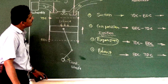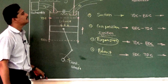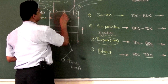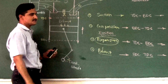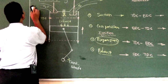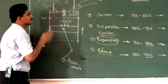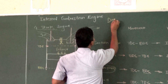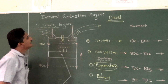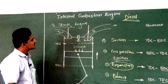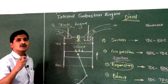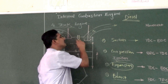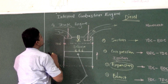Now let us discuss the diesel engine. There is a slight but important difference between a petrol engine and a diesel engine. The most major difference is: instead of a spark plug, we have a fuel injector to inject fuel. The carburetor is absent in the diesel engine. So first difference: spark plug is replaced by fuel injector; second difference: carburetor is removed. The processes — suction, compression, expansion, exhaust — are very similar.